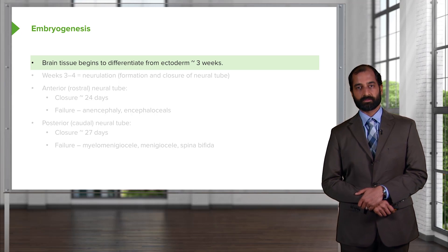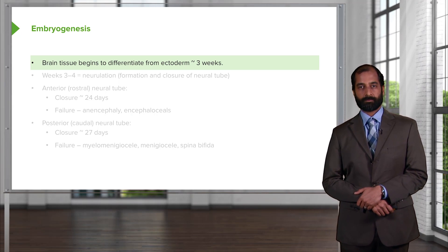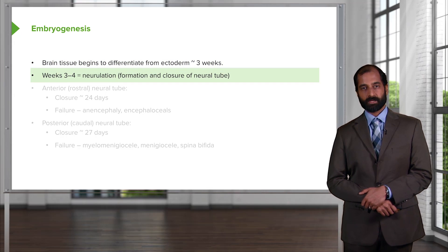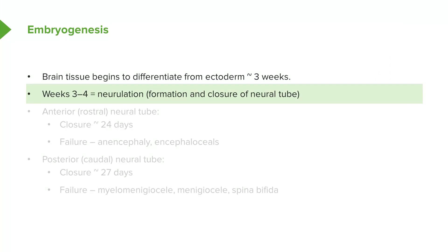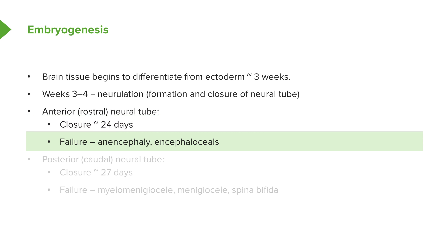The brain tissue begins to differentiate from the ectoderm at approximately three weeks. During weeks three and four, we have neurulation, which involves the formation and closure of the neural tube. The anterior, or rostral, end of the neural tube closes within 24 days — approximately one month — and failure of this closure may result in anencephaly or encephalocele.